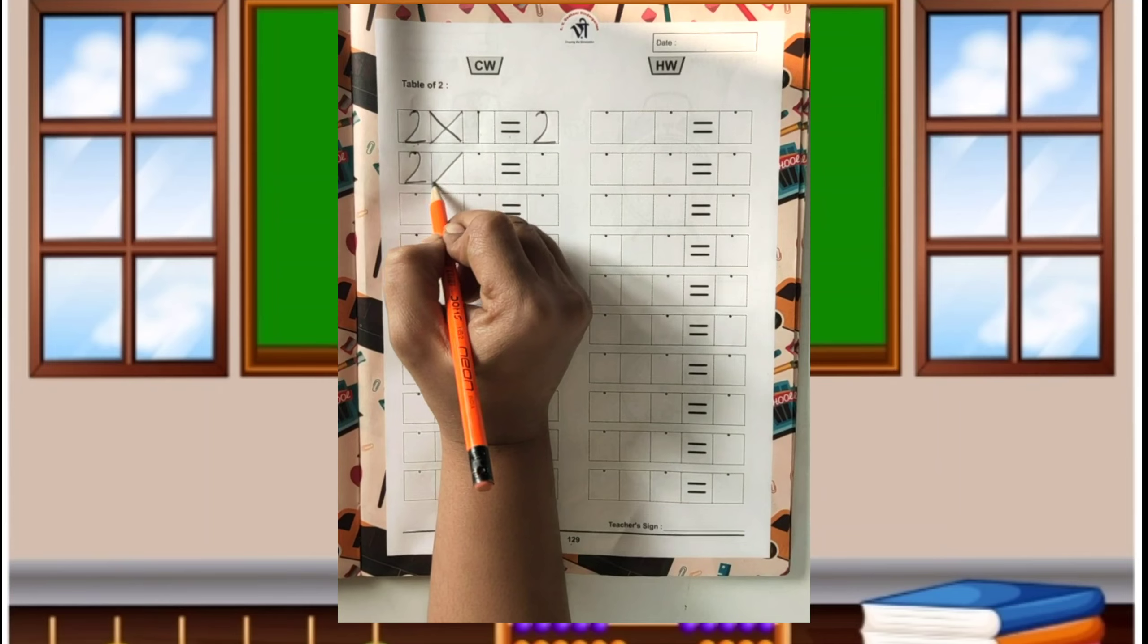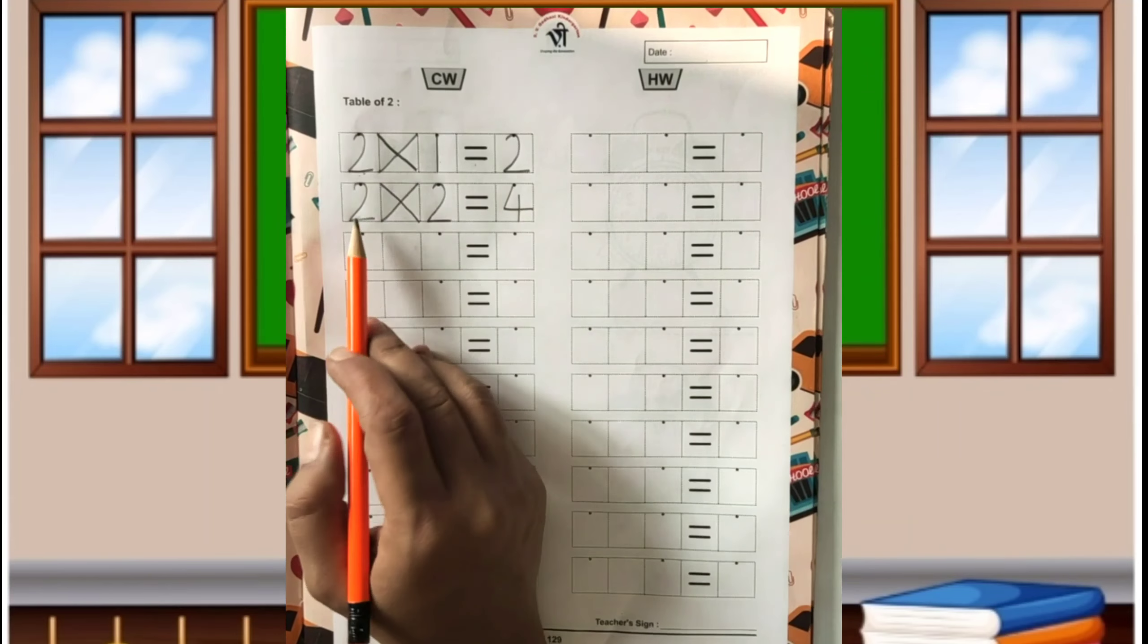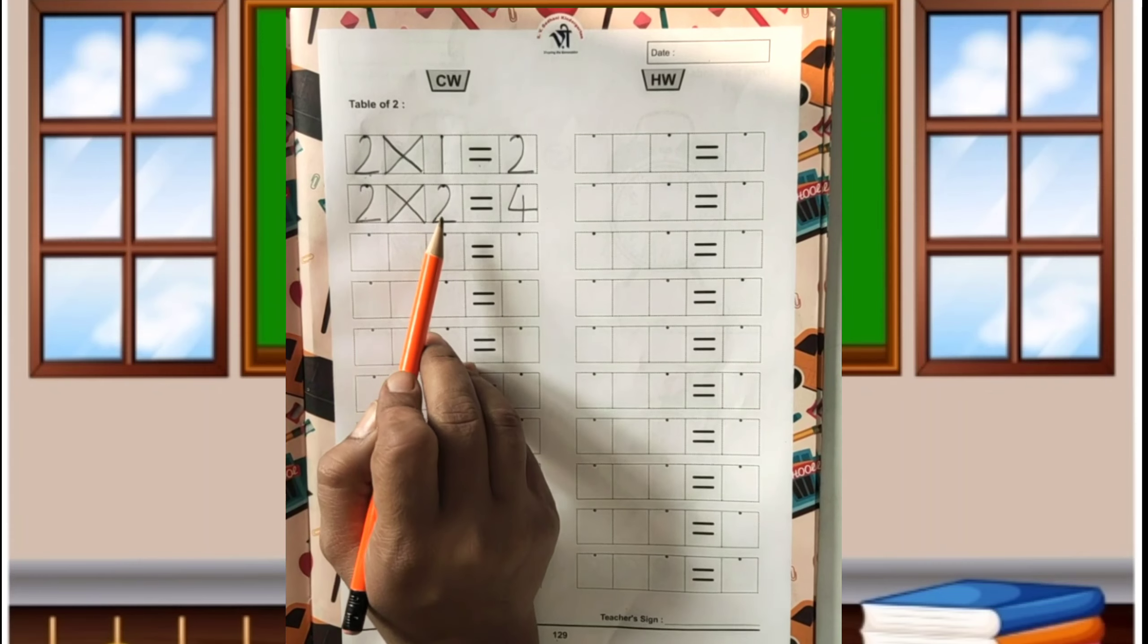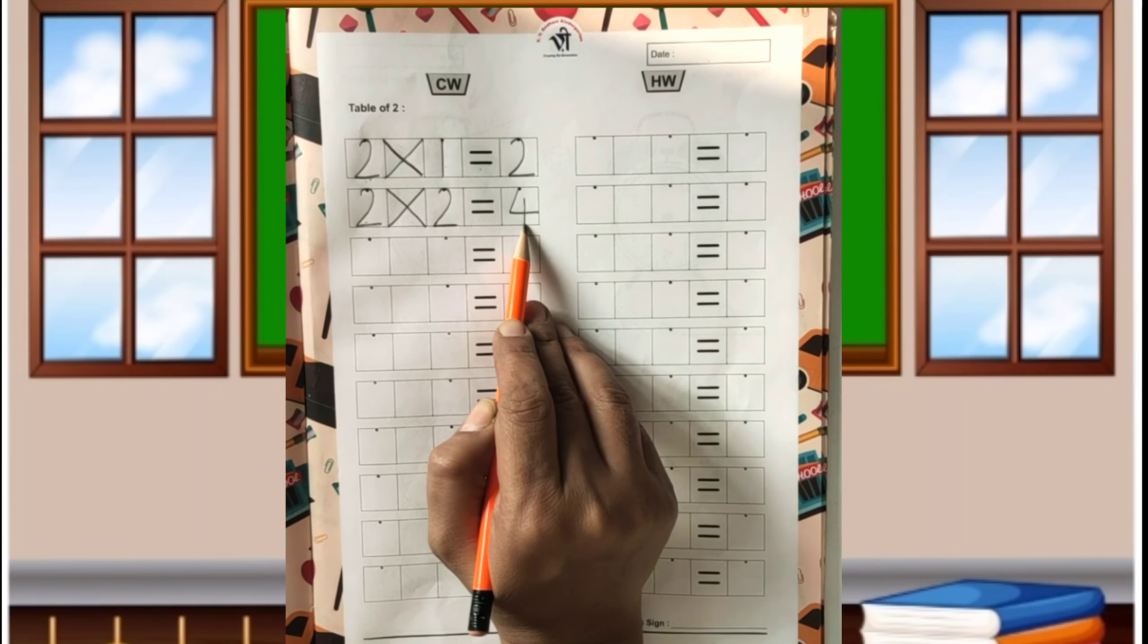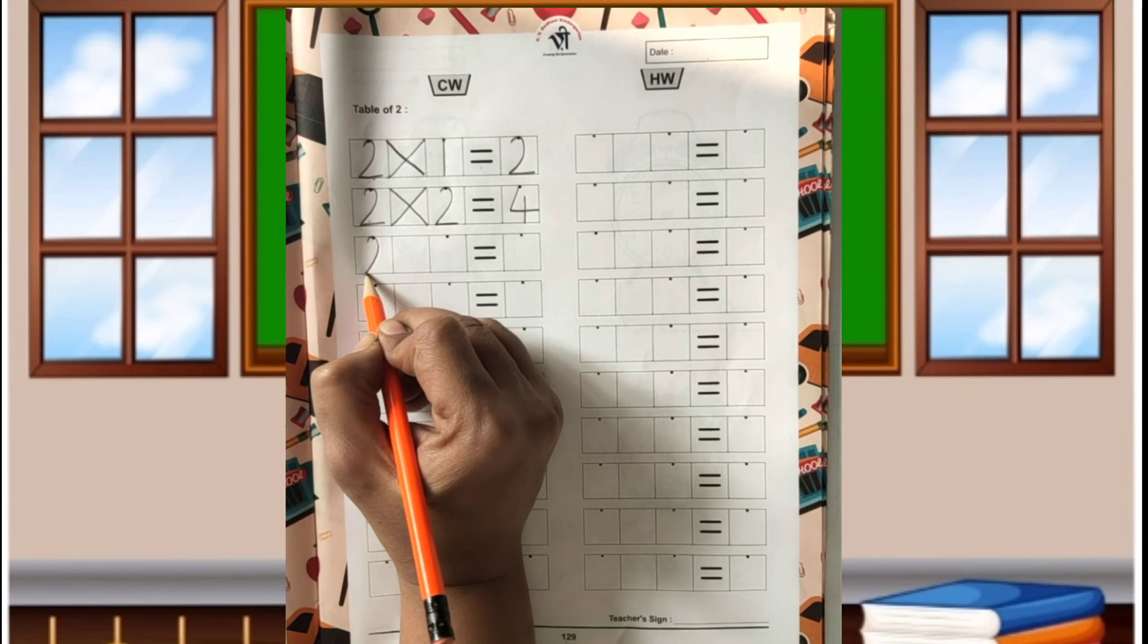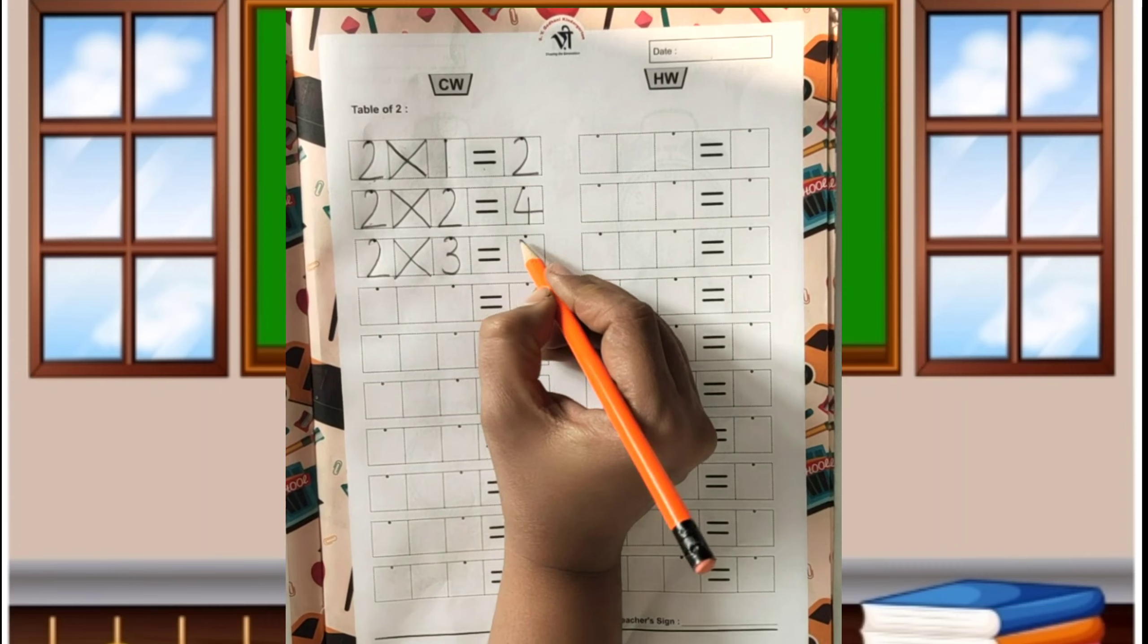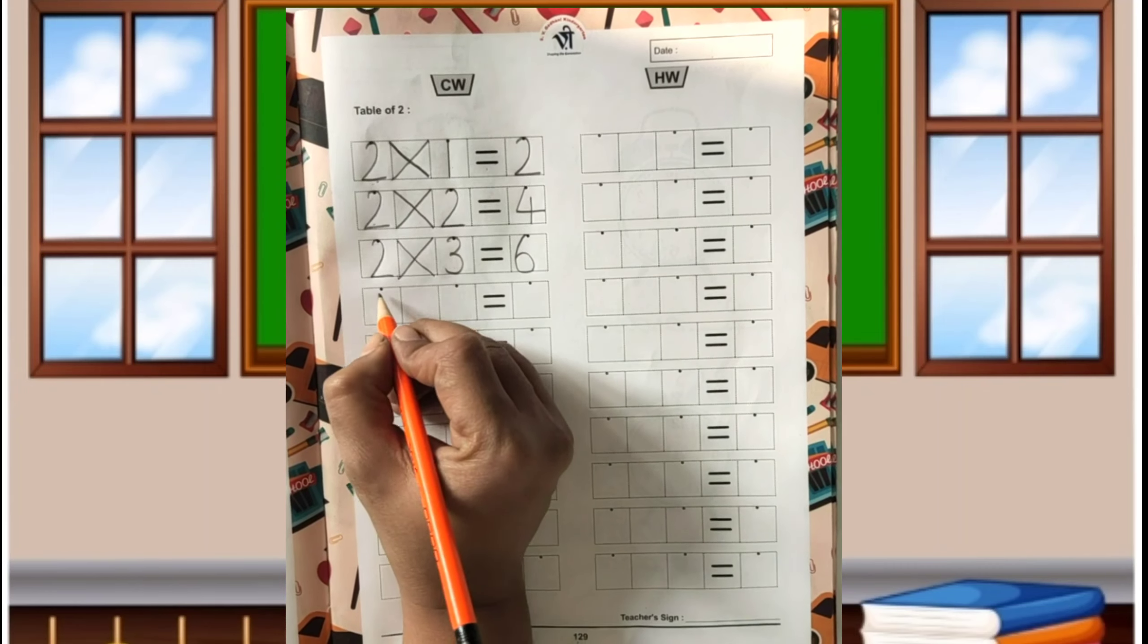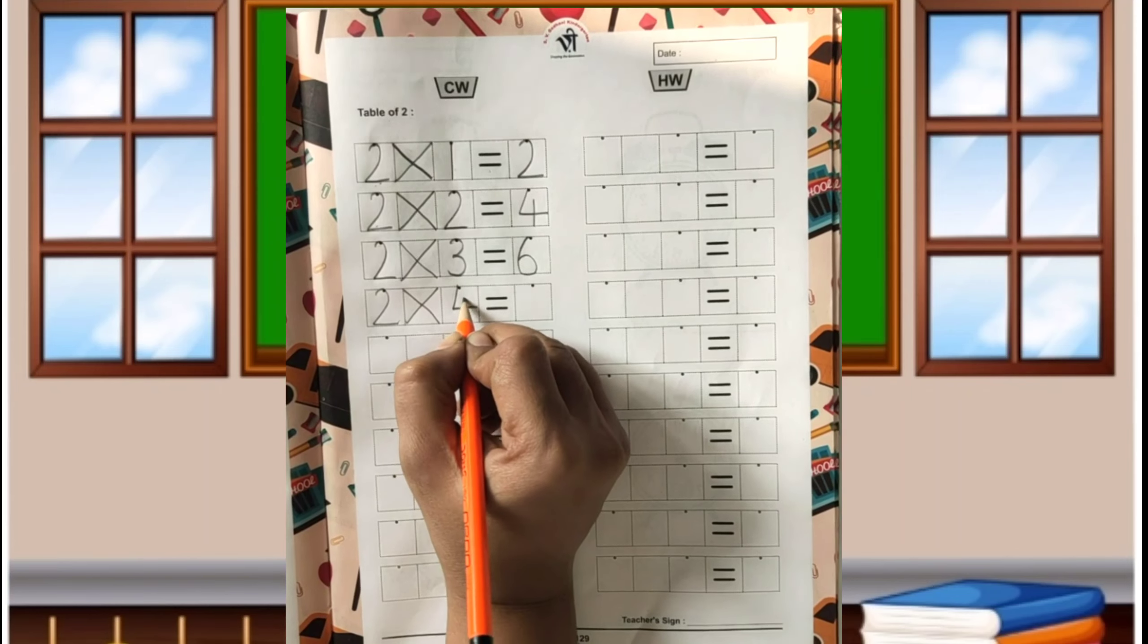2's are 4. If we count 2 things 2 times, we will get 4. 2-3's are 6, 2-4's are 8.